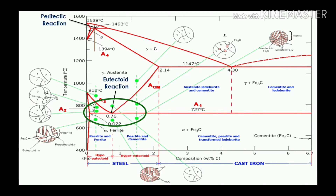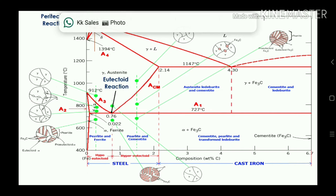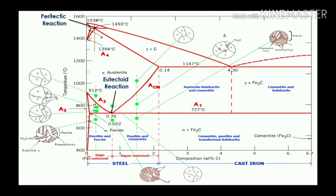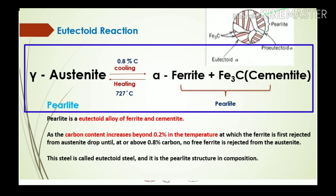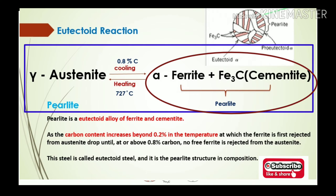The next reaction takes place at 0.8 percent of carbon and 727 degrees centigrade — the lowest temperature on the iron-carbon diagram. This is the eutectoid reaction, where gamma austenite converts into two different solid phases. At 0.8 percentage of carbon, it forms a pearlitic structure. Gamma austenite converts into alpha ferrite plus cementite (Fe3C).